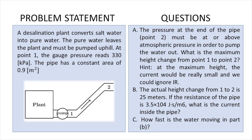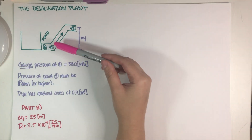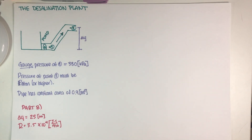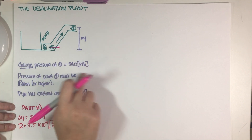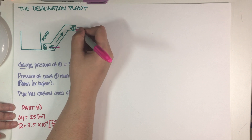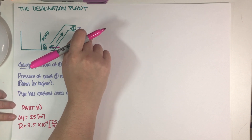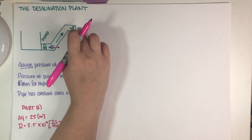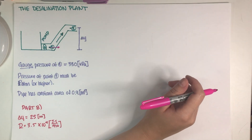I have everything written down here in my notes. I have a little diagram with a pump, and the two points of interest are points one and two just as the picture suggested. What we have to find is: the gauge pressure at point one is 330 kilopascals, and point two has to be at least atmospheric pressure in order for this to work. The question is asking us for the maximum height difference between points one and two. Let's go ahead and start with our Bernoulli equation so we can better understand the problem.